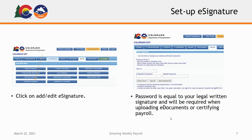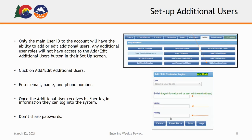Once you've added all your employees, the next thing you'll want to do is create your e-signature password. This password is equal to your legal written signature and will be required when you upload an e-document or certify your payroll. The third thing you'll need to do is set up any additional users within your company that will need access to the account without having to give them your login credentials. It's very important to never share your password with anyone — you can add as many users to the system without sharing your password. Sharing passwords opens up potential problems when several people are working on payrolls. Each user will have their own user ID, login password, and e-signature password.